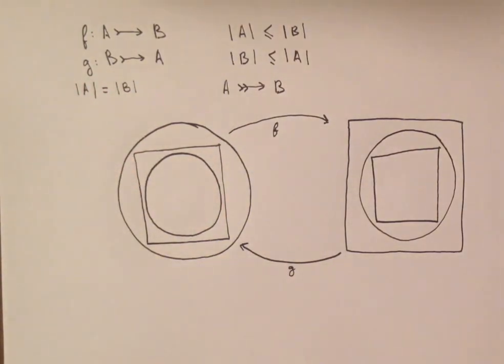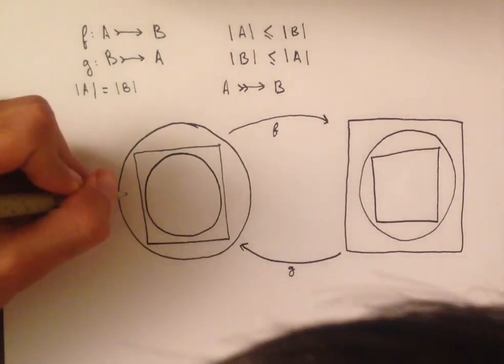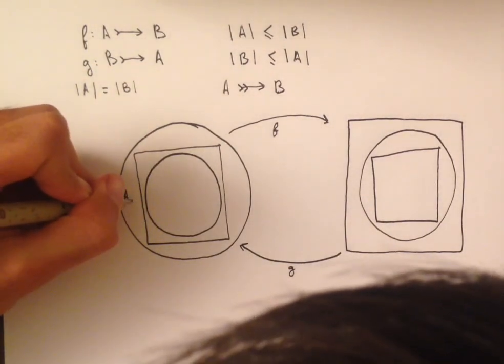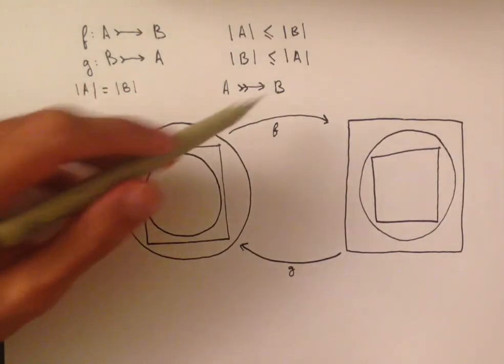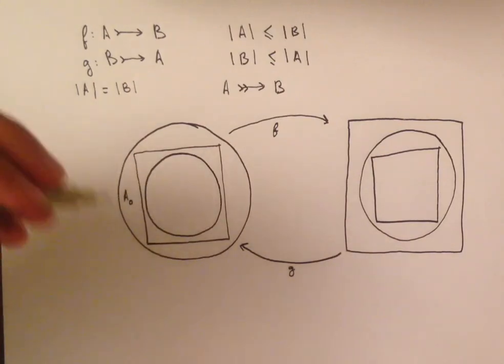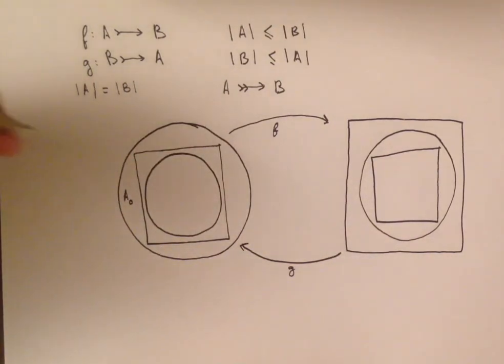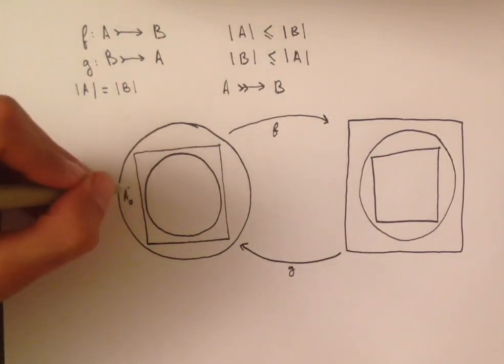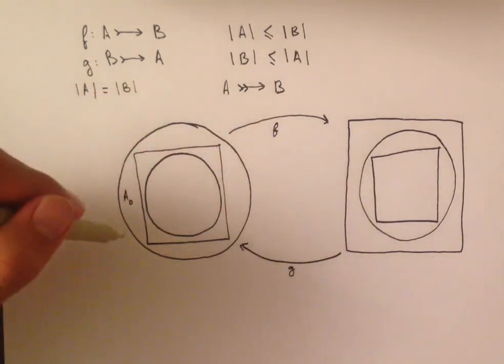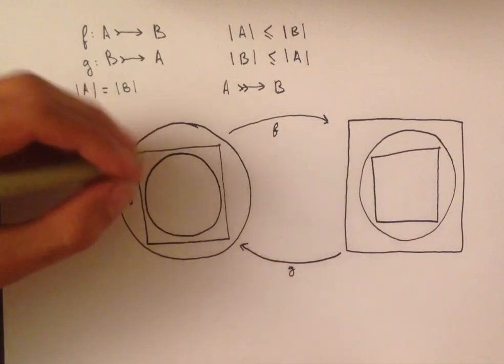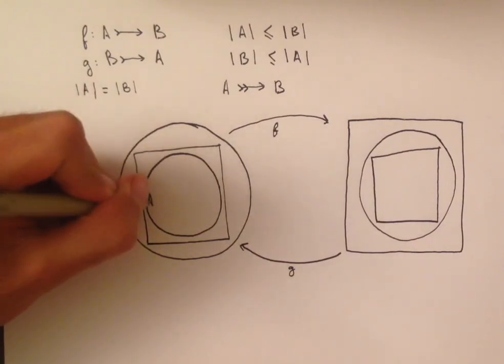And we're going to start naming these shapes. So the big circle, which is named A, I'm also going to call A0. So A is equal to A0. And then every time we take F and we take G again, I'm going to add 1 to the subscript. And so G of F of A0, which is this smaller circle in here, I'm going to call it A1.